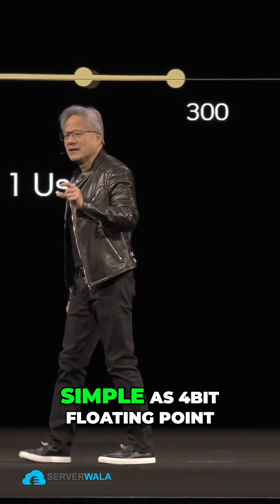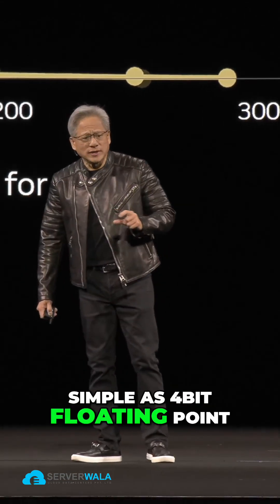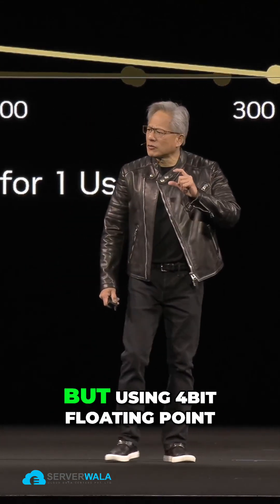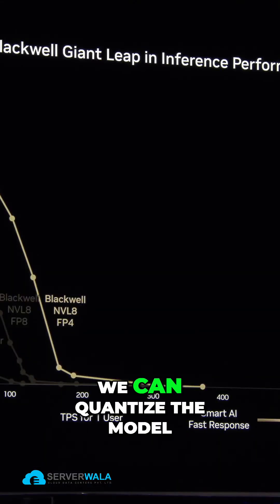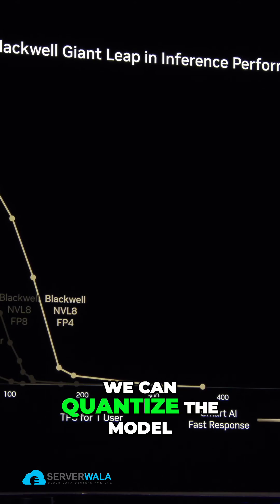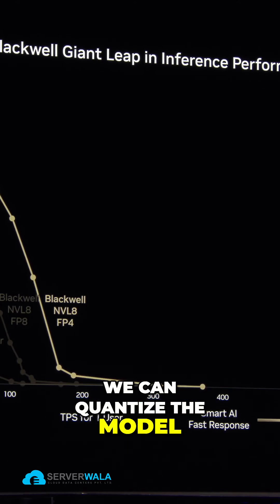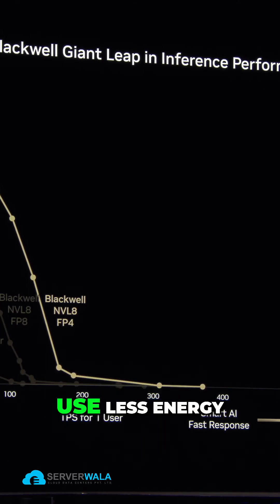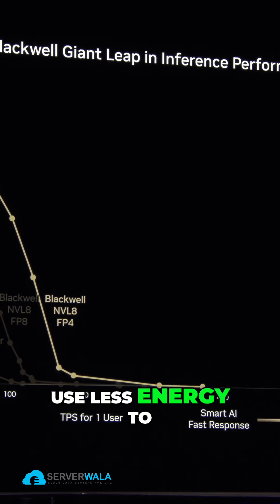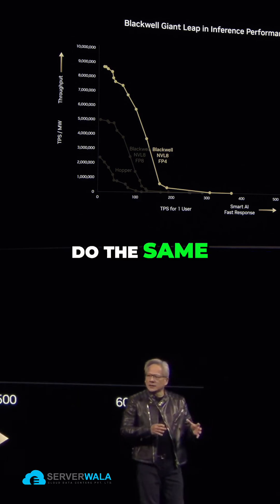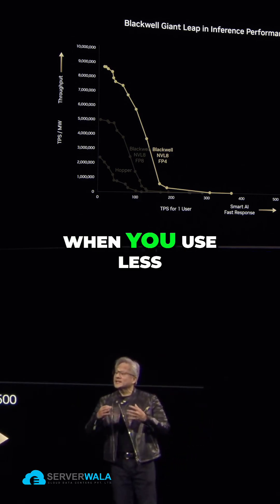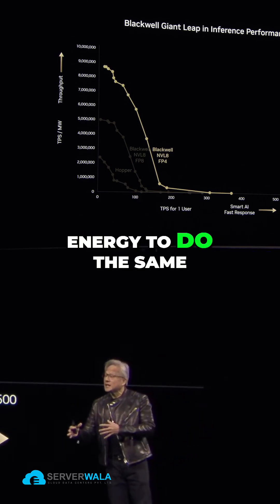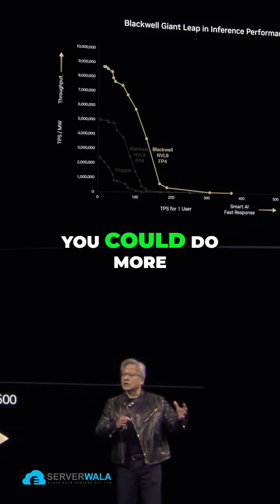It's not quite as simple as 4-bit floating point, but using 4-bit floating point we can quantize the model, use less energy to do the same. And as a result, when you use less energy to do the same, you can do more.